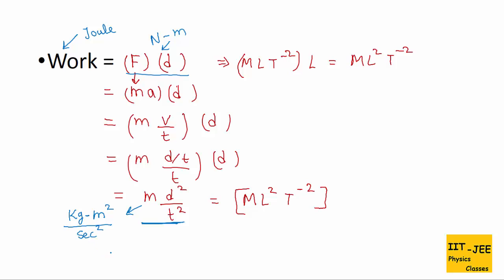So it becomes second squared. We found three units of work and these are all equivalent units. Joule is equivalent to Newton meter, and also equivalent to kilogram meter squared per second squared.